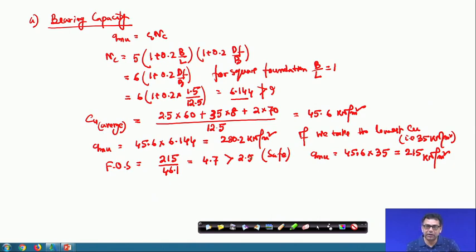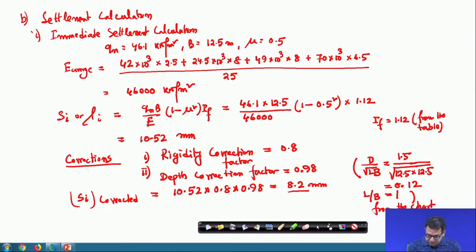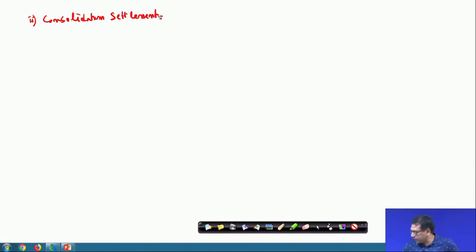Now let us check how safe it is against settlement. The immediate settlement has been calculated as 8.2 mm, and now we will go for the consolidation settlement.